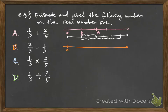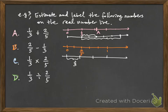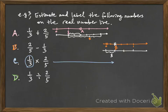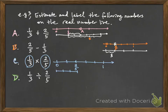For two-fifths minus one-third: divide the interval between zero and one into five equal pieces and take two parts to locate two-fifths. Then take away one-third from that point — dividing the interval into three equal pieces gives the size of one-third. The difference between two-fifths and one-third is a tiny amount, so the answer for B is a point very close to zero. For one-third times two-fifths, interpret this as taking a third of two-fifths: find two-fifths, then divide the interval between zero and two-fifths into three equal pieces and take one part. This places C between zero and one-fifth.